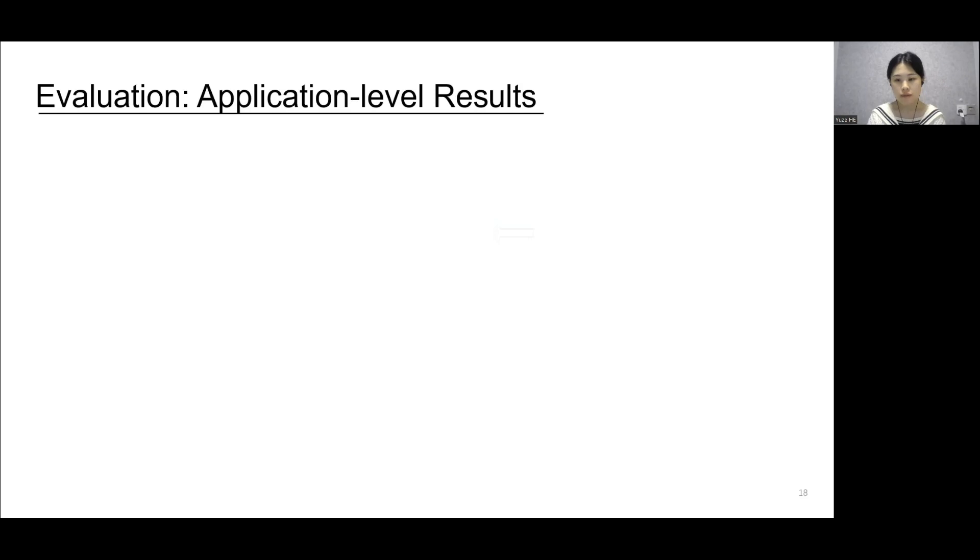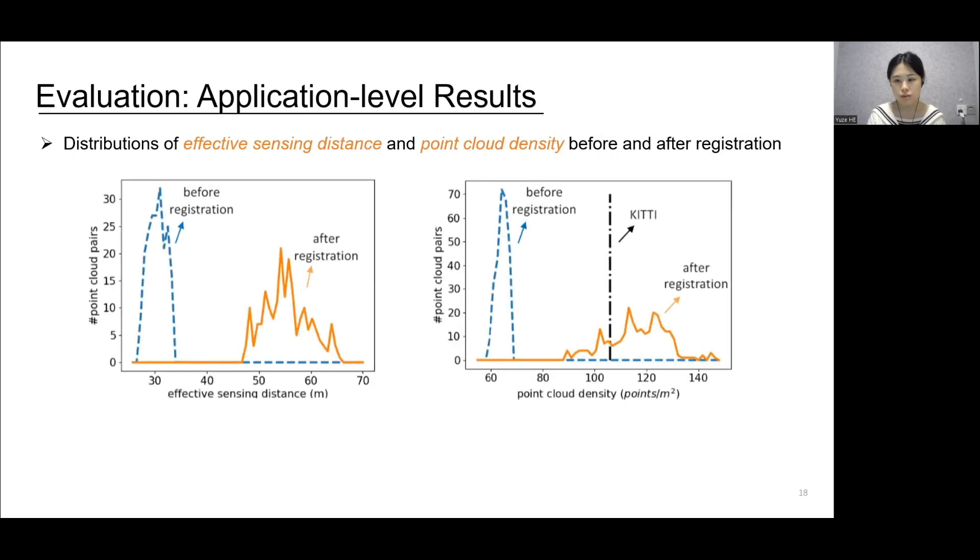We first evaluate how much application-level perception improvement our approach can bring to autonomous vehicles using the real traffic dataset. We use two metrics to evaluate the application-level results. The first is effective sensing distance. It reflects how far a vehicle can see. The second is point cloud density.